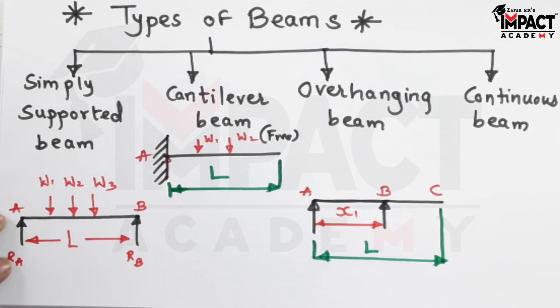Then we have overhanging beam, wherein L is the entire span or length of this beam and it is supported anywhere in between. It means some portion of the beam would be extended beyond the support. As we can see here, the beam is supported at A and B, and I will say that this is the length X1 which is supported.